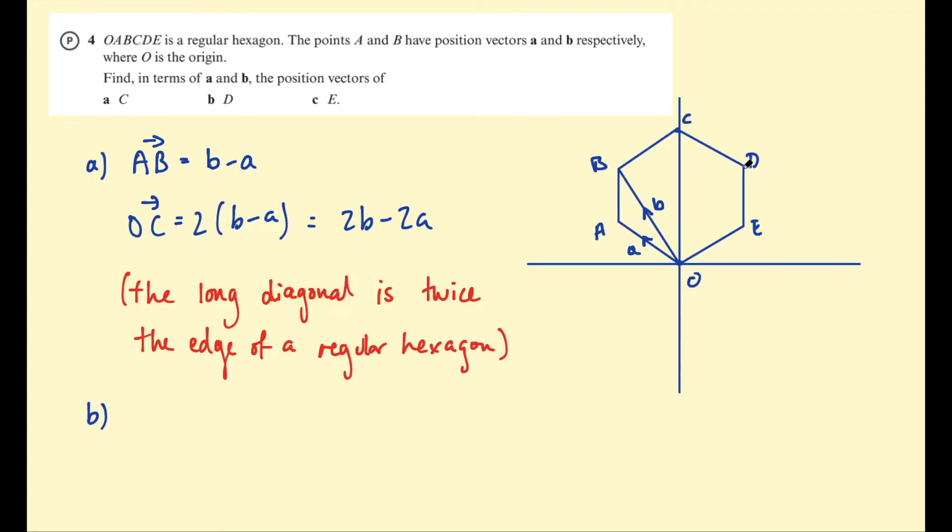Okay, now we need D. D in terms of a and b. And for this I think I want to go from C to D. Now in a regular hexagon the edges are parallel, so CD will be parallel to OA. And that means we know that DC is also the vector a. So if we're going from C to D, that would be negative a. So to get to OD we just need to do OC plus CD. So that's 2b - 2a, and then CD is just negative a. So that's going to be 2b - 3a.